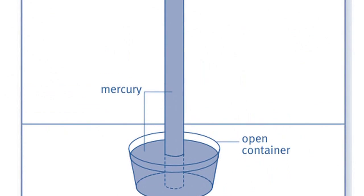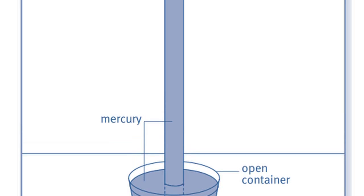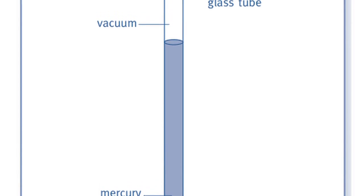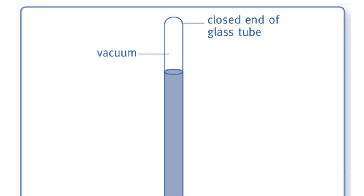As the pressure of the air pushes on the surface of the mercury in the cup, the mercury is forced up into the tube because there is no air and no air pressure in the other end of the tube to push it down. Tell the students that the height of the mercury was measured in inches.